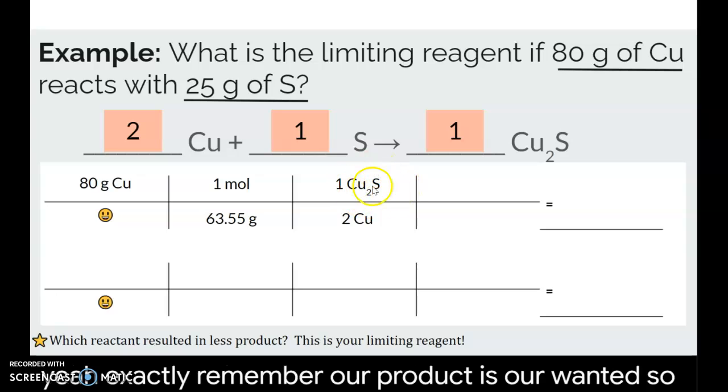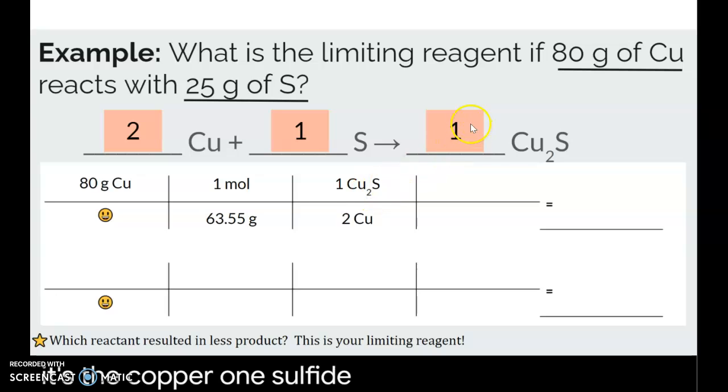So remember, our product is our wanted. So it's the copper 1 sulfide. So we're just putting a 1 right there. And our given is copper. That's what we're starting with. So it gets a 2 because there's a 2 in front of copper in the balance equation.